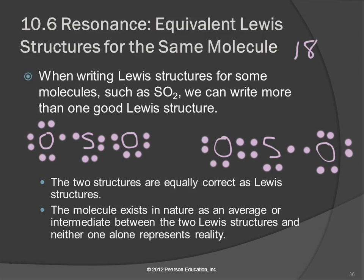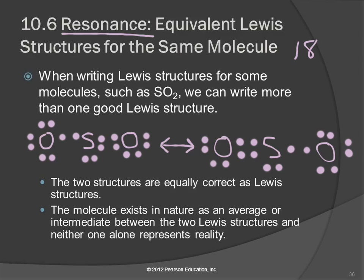What is actually true is something in between these two structures. There's not a great way in Lewis theory to draw that, except to say it's going back and forth between these two — it's in between. What we actually have is like a one-and-a-half bond between each sulfur and oxygen. These are called resonance structures. On a simplistic level, we can think of it resonating back and forth, but what is actually true is the structure in the middle — between those two. We draw both and use a double-headed arrow to say it's between them.